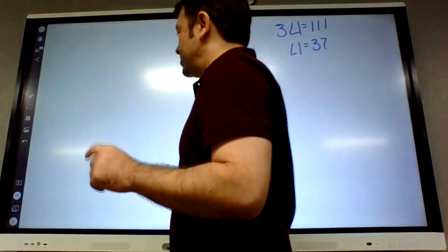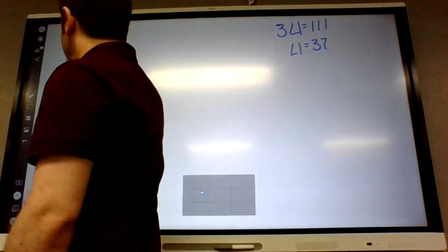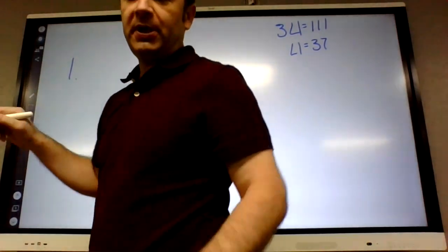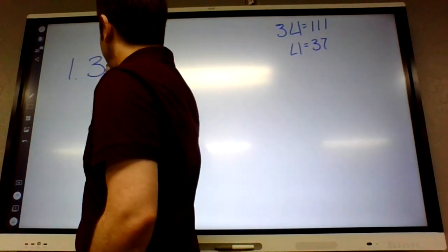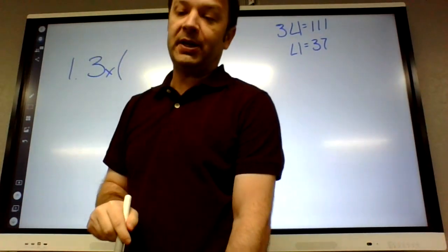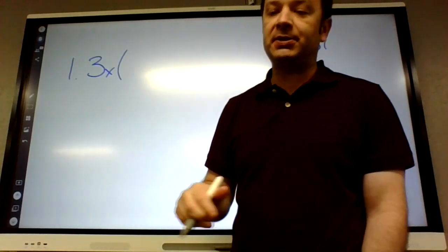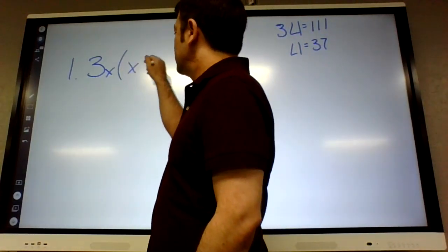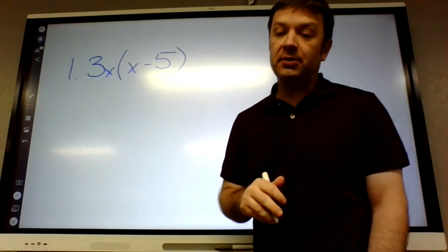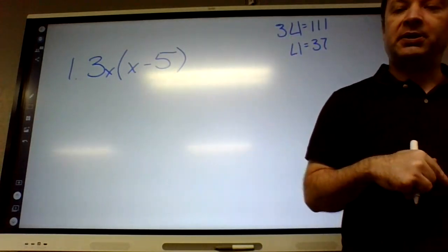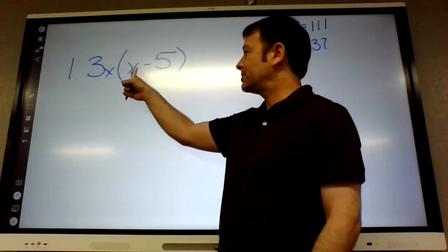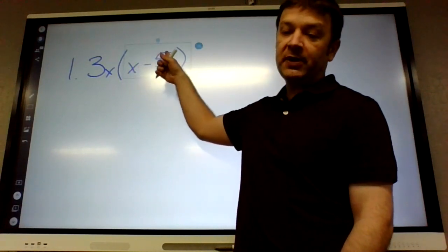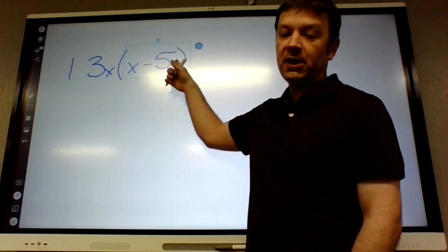So on number one, the first question you should ask, can we take anything out? 3x. What's left if we take out a 3x? Divide both terms by 3x. 3 divided by 3 goes away. X squared divided by X is X. 15 divided by 3 is 5. And then the X's go away. So x minus 5.